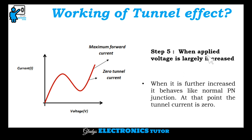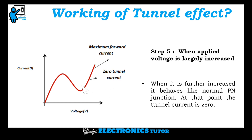Step 5 is when applied voltage is largely increased. When it is further increased, it behaves like a normal PN junction. At that point, the tunnel current is zero.